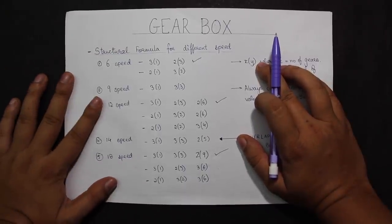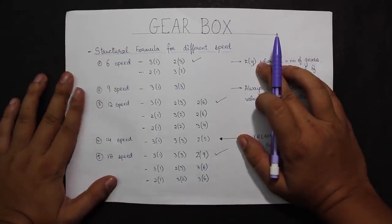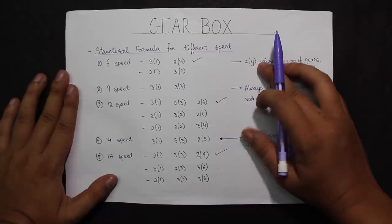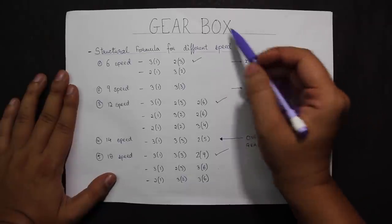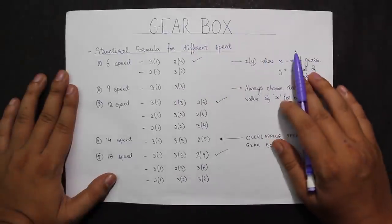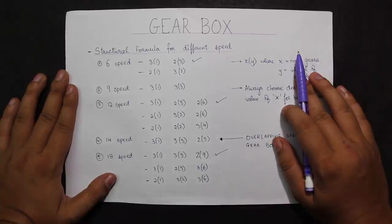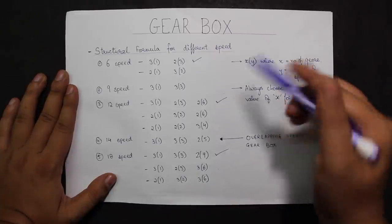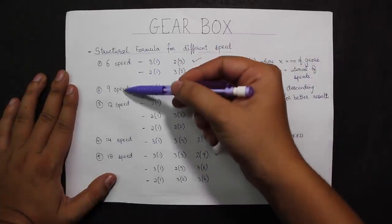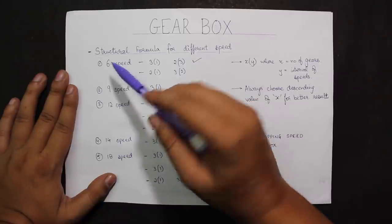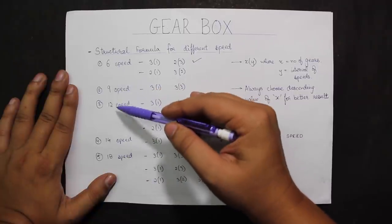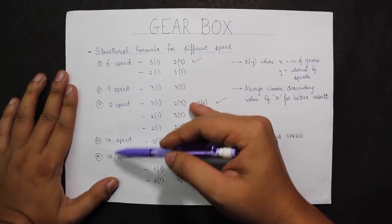RoboMectricks now presents videos on entirely different topics in this playlist: the designing of a gearbox, starting with the speeds. We have five different speeds available to create a gearbox — 6-speed, 9-speed, 12-speed, 14-speed, and 18-speed.